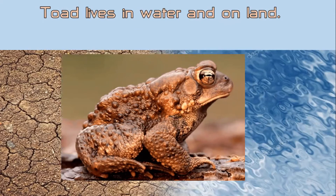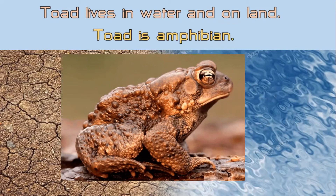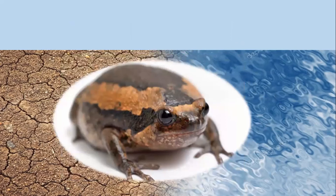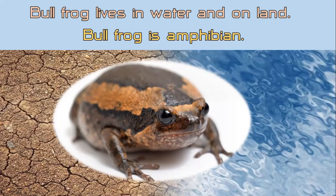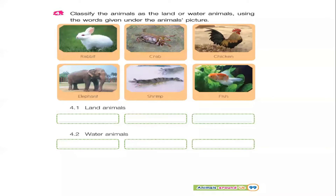The tortoise lives in water and on land. The tortoise is an amphibian. What is it? A bullfrog. Bullfrog lives in water and on land. Bullfrog is an amphibian.